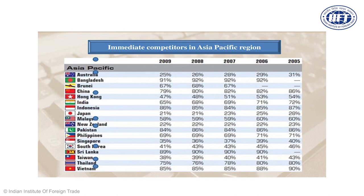Your immediate competitors in the Asia Pacific region — for example, Bangladesh — were found to have 91% software piracy. Indian companies were losing business to Bangladesh because it is a least developed country getting GSP treatment, while India is a developing economy. But once the 91% piracy rate was established, buyers' priority in the US shifted toward buying similar products from Indian companies rather than Bangladesh, because of the UCA law.